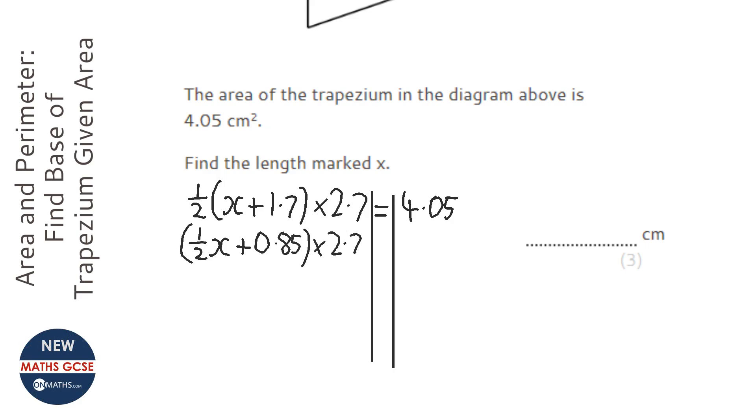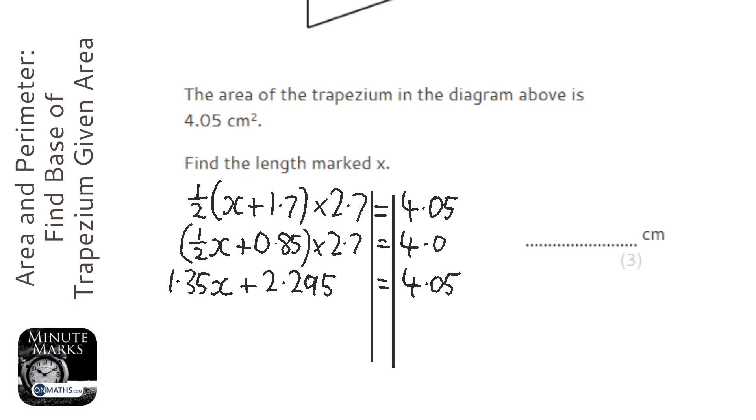We're going to expand it again by timing both by 2.7. So 0.5 times 2.7 is 1.35x, plus 0.85 times 2.7, which is 2.295. We should put the equals here, so I'm not doing anything to the right-hand side.